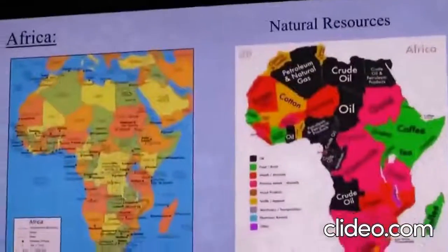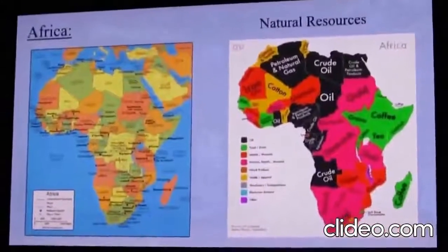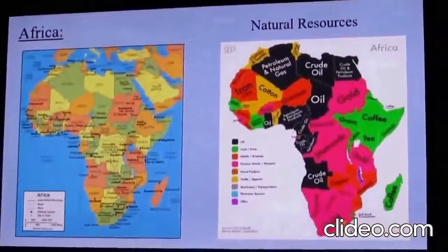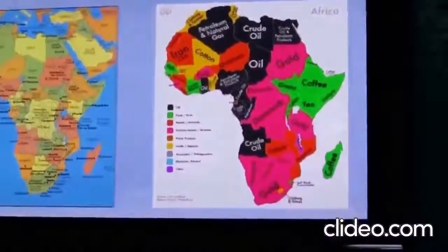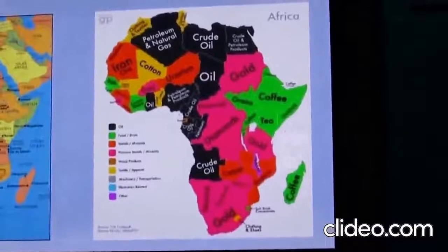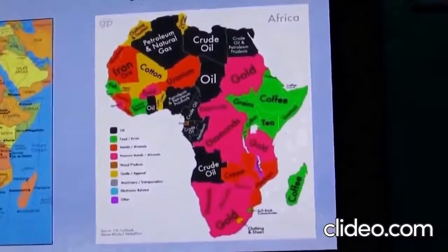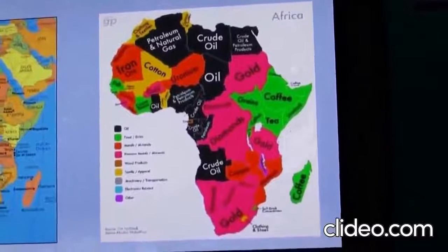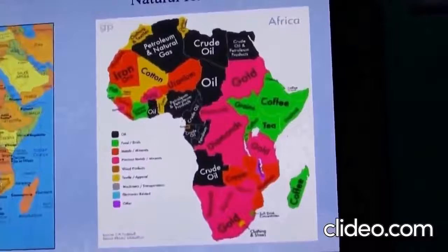This is the continent of Africa. The continent of Africa is known for its natural resources. In the second picture, you can see that this continent is a resource for petroleum and natural gas, iron, cotton, uranium, crude oil, gold, diamonds, coffee, tea, and more.